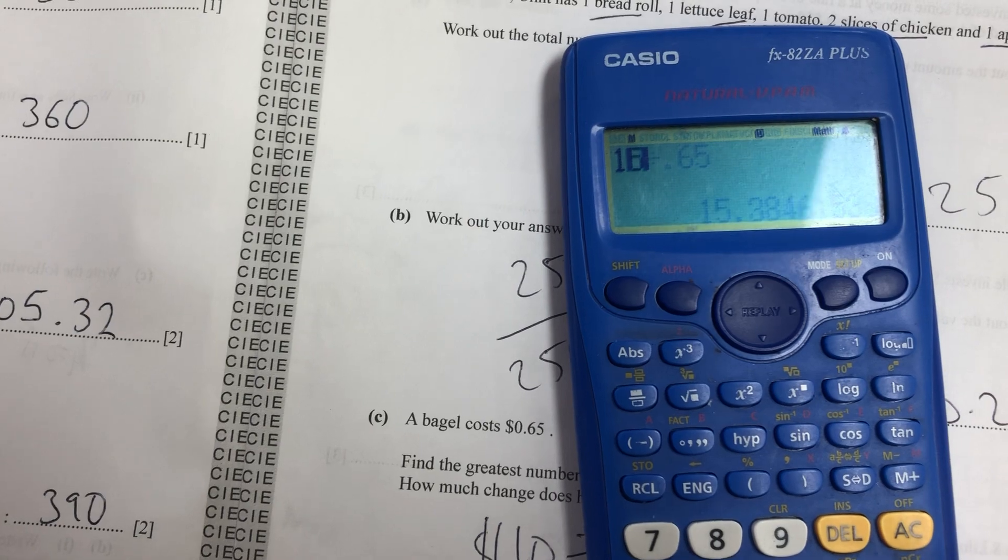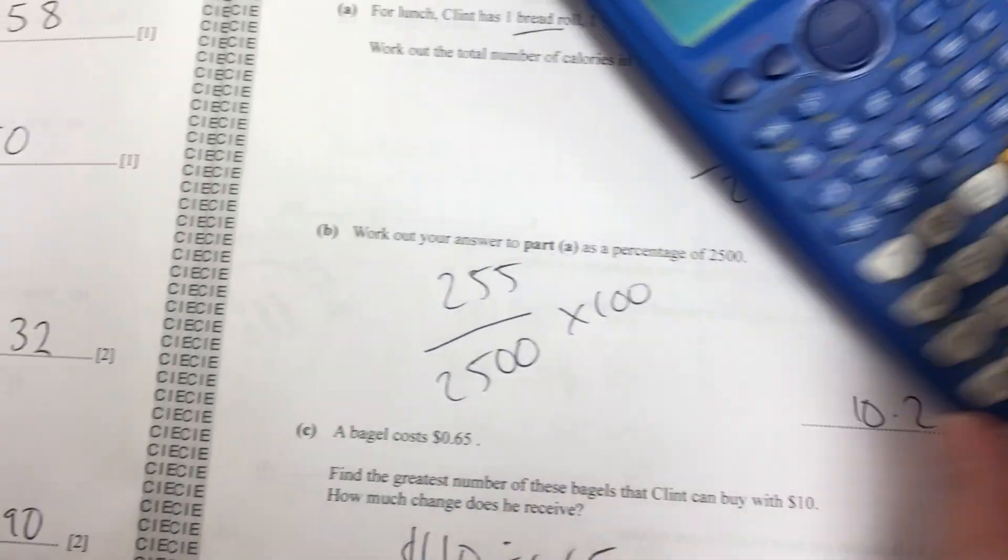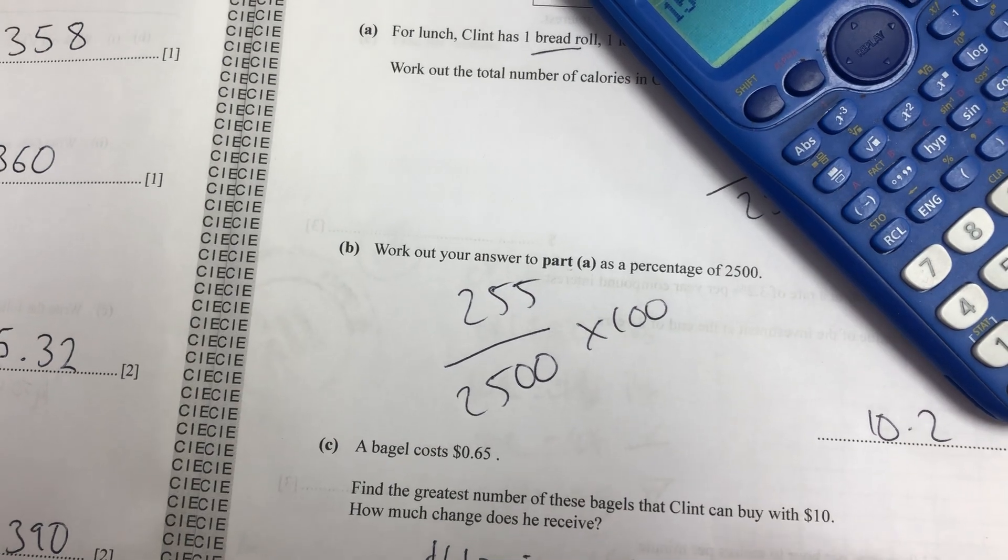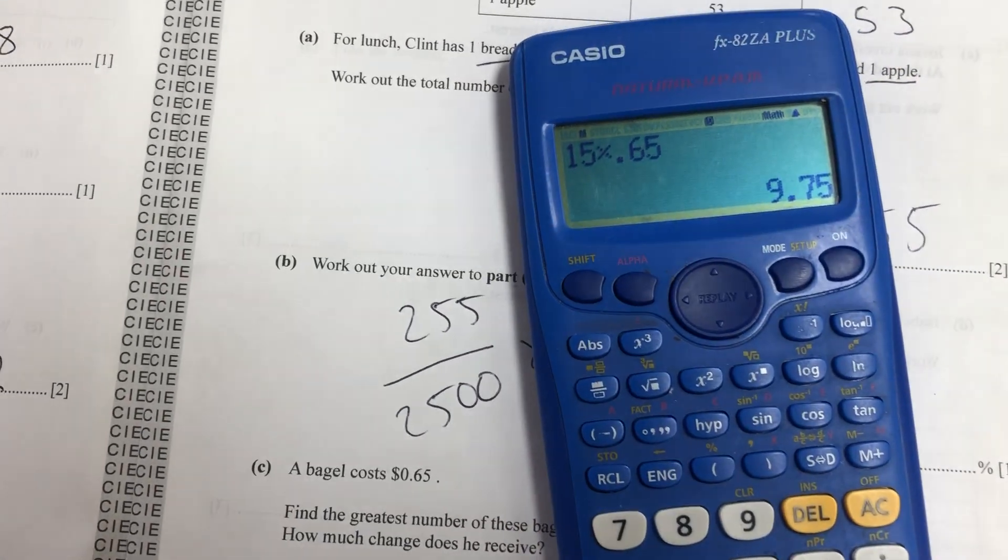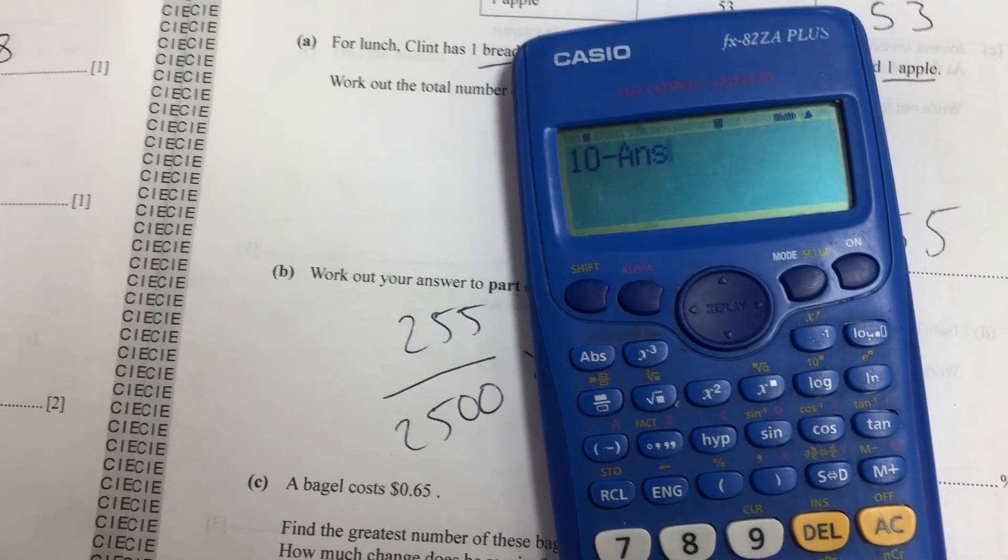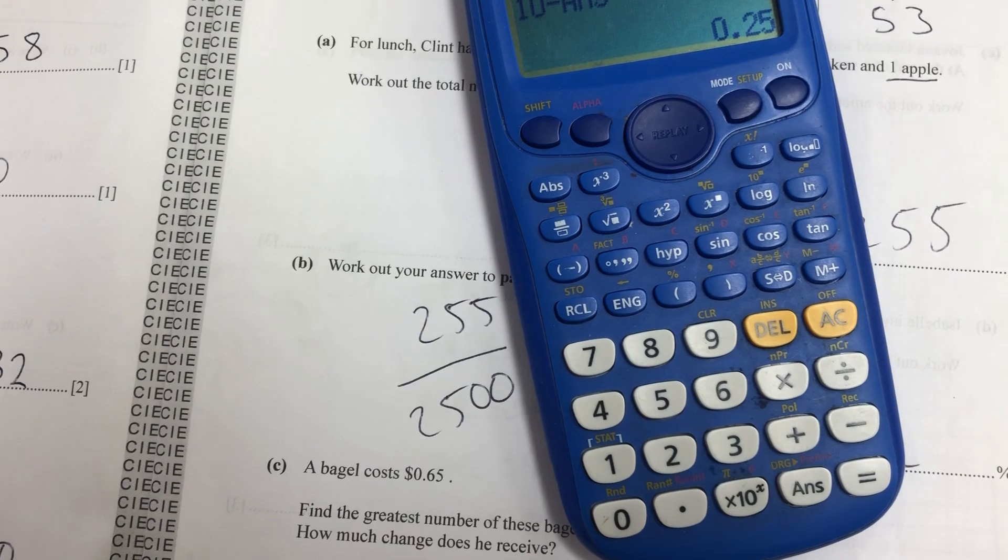Now 15 times 0.65 is 9.75. That's how much that'll cost. So the change, 10 minus that answer. Answer button's really important in your calculator. 0.25.